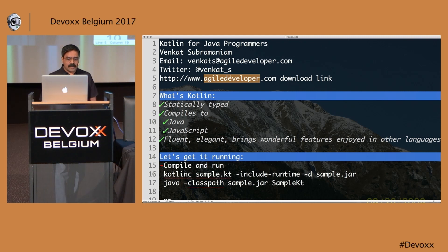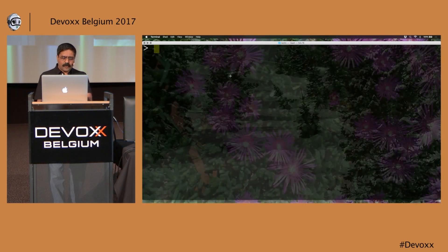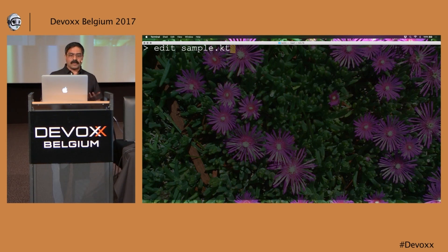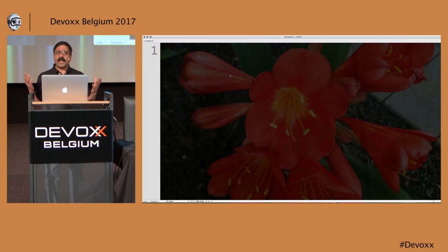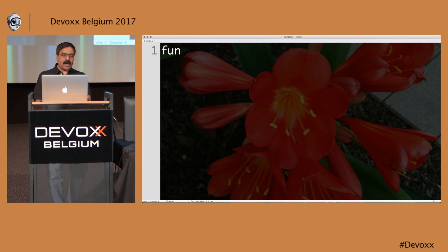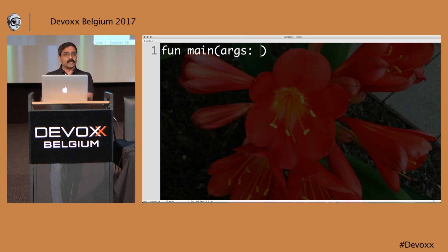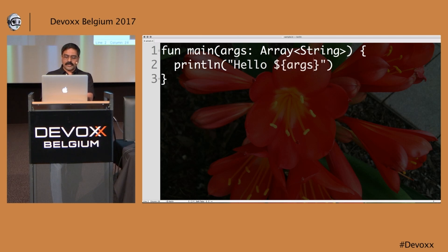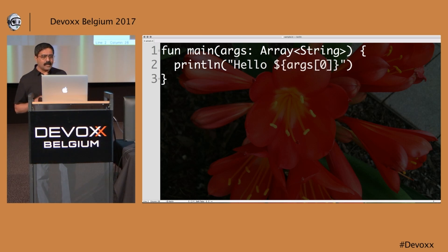Let's talk about compiling Kotlin and playing with it. I'm going to start with a fairly simple example — just edit a file called sample.kt, with .kt being the extension for Kotlin. I'll start with a main function, as would be traditional in Java applications. I'll declare args as an array of strings, and then simply print a line saying hello with args[0].